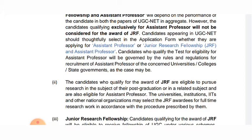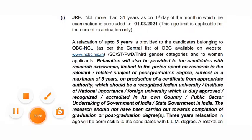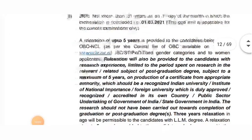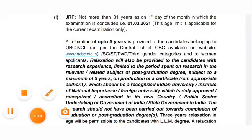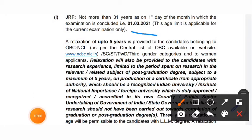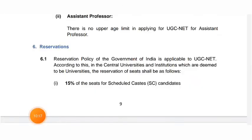For age limit: for JRF, the upper age limit is 31 years as of 1st March 2021, with 5 years of relaxation for OBC NCL and SC/ST candidates. For the Assistant Professor eligibility, there is no upper age limit — the age limit of 31 years applies only for JRF.